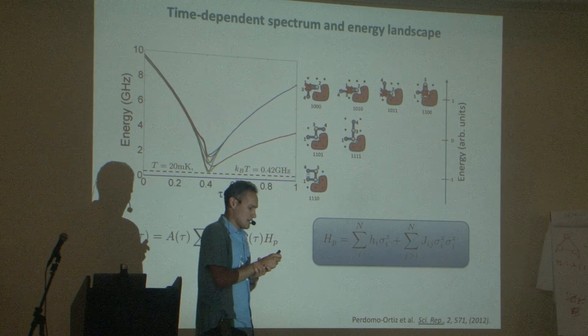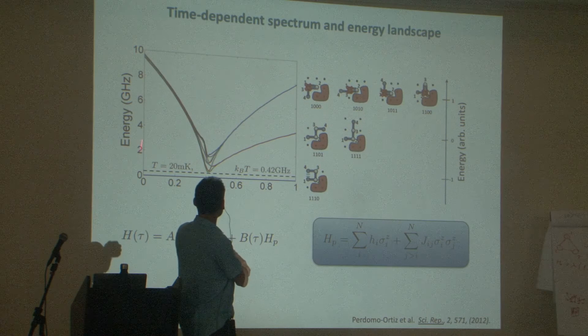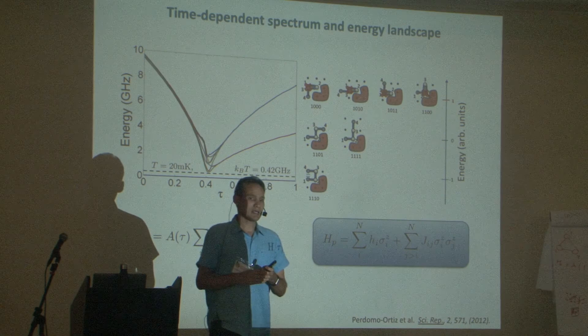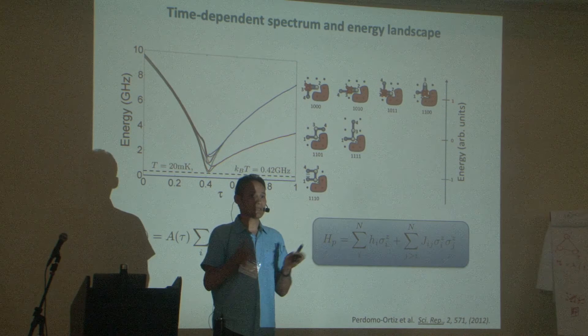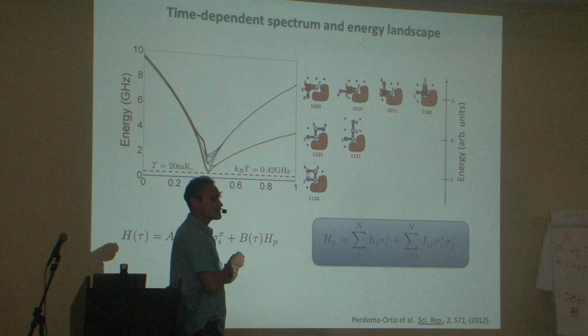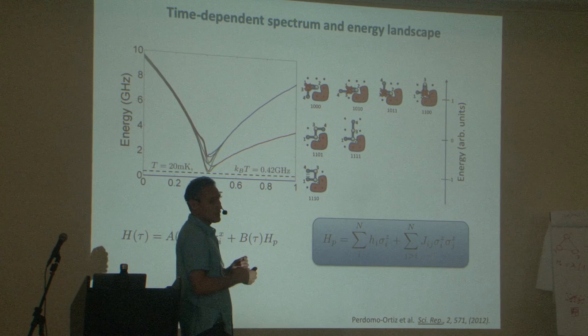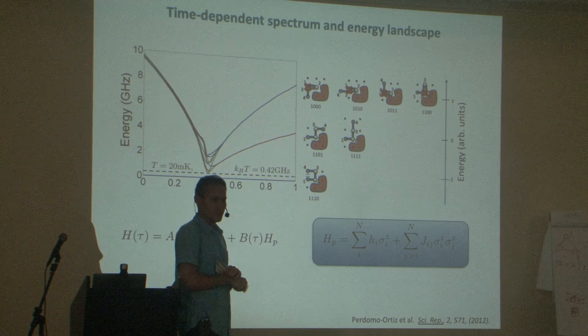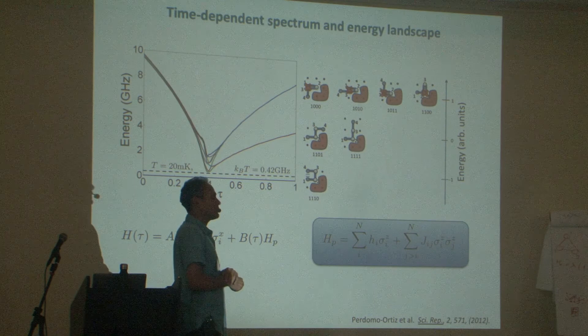This is important for experimentalists: tell me the energy scale and the temperature of your device. Although the D-Wave device operates at 20 millikelvin—200 times colder than deep space (roughly 3 Kelvin)—that temperature is actually comparable to the gap of the device during the time-dependent Hamiltonian evolution. This can be exploited as an asset, and it is the main reason why you can actually sample from a Boltzmann or thermal distribution.